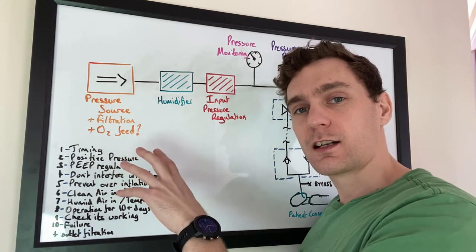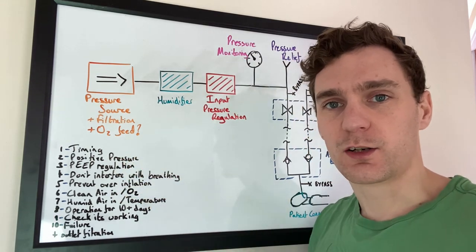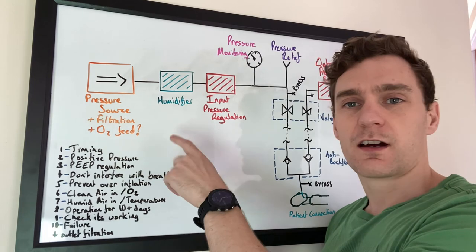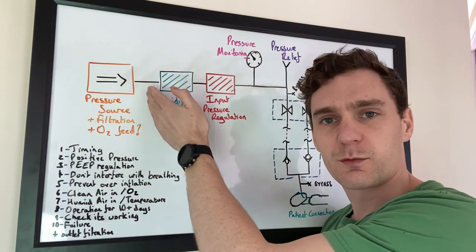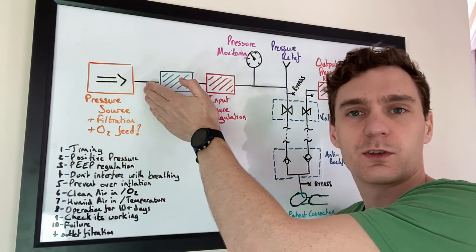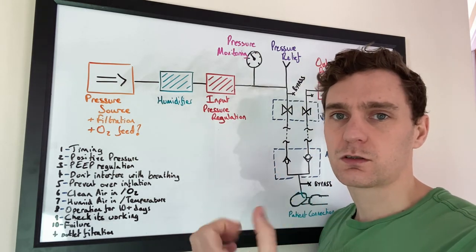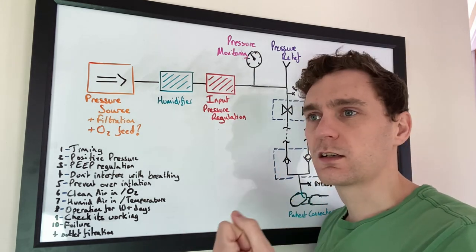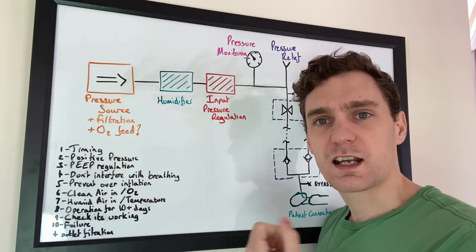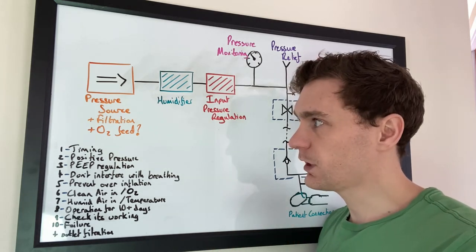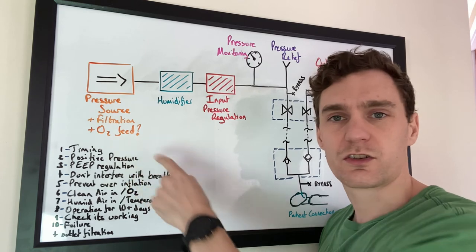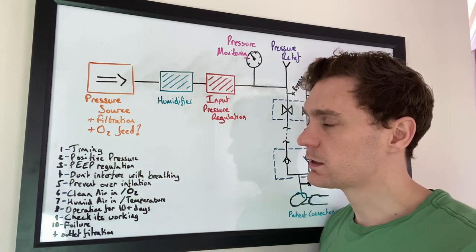The pressure source is an area that's been covered by a lot of people online already. A lot of the time people stop at this point once they've got the pressure source. So a few examples include BVMs that are being squeezed by some cyclic motion, or just applying pressure from a compressed air canister, or an oxygen concentrator with some positive pressure behind it.